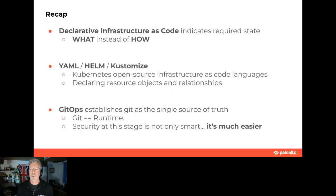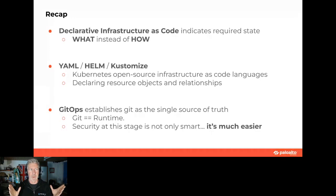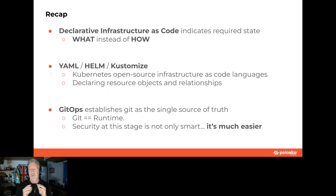Quick recap: declarative infrastructure as code indicates the required state — it answers 'what do I want' as opposed to 'how do I want it,' relying on a provider to create that. The languages we'll be using are YAML, Helm, and Kustomize. Git establishes Git as the single source of truth — Git equals runtime. So why scan runtime when I can scan Git? Because I know what the state is going to be.